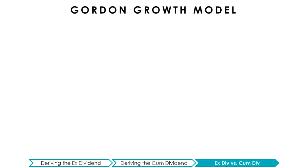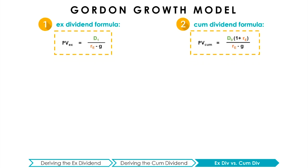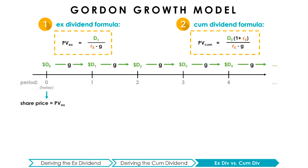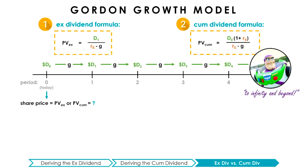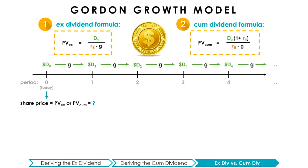After deriving both formulas, it's easy to become overwhelmed by all the equations. However, the purpose of understanding these derivations is to help you better understand where the Gordon growth model comes from, how it can be used, and why it works. There is no magic to the Gordon growth model — it calculates the present value of all future expected cash flows. Finance is really about putting prices on different streams of cash flows, and with the ex-dividend and cum-dividend formulas, we can price infinite streams of dividends.